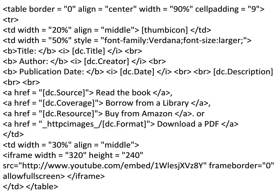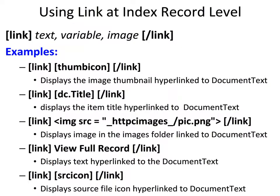There are any number of ways to get to the document text level. The link and slash-link tags in Greenstone do that. What we put in between them can be almost anything: images, a thumbnail icon, or the original source file. We can put metadata elements like DC title, add a hyperlinked image from our images folder, add plain text like 'view full record', or add a source icon. For example, if we import PDF files, Word documents, PowerPoints, or MP3s, they get an icon appropriate to that file type, and we can hyperlink that icon to the document text level.